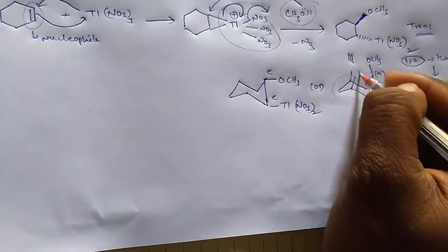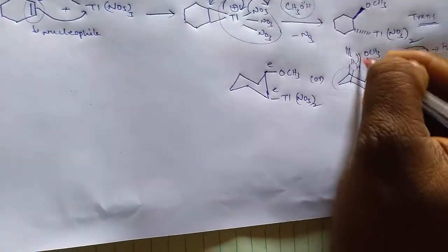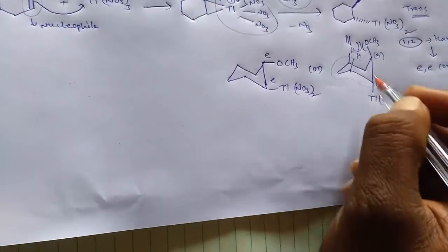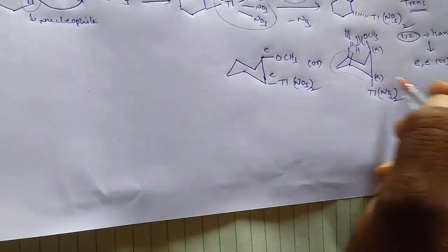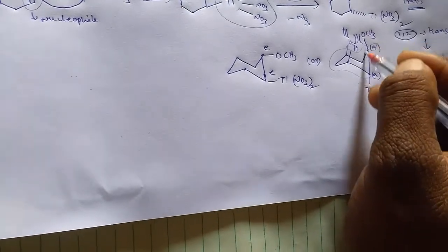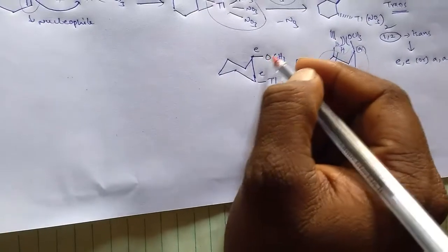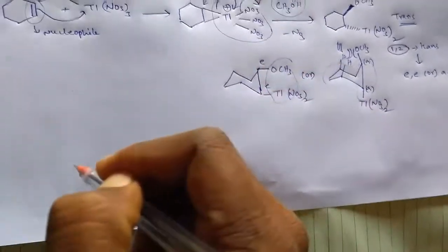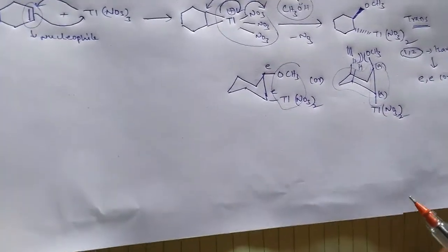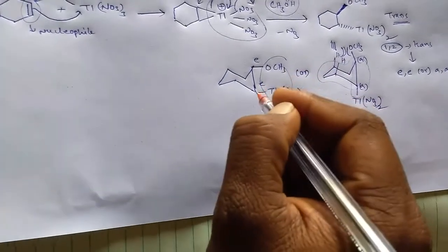If you observe here, the axial-axial has more crowding, so that's why this is less stable when compared with equatorial-equatorial. So that's why the equatorial form is the major and stable one.